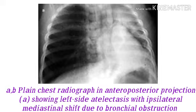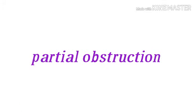A dense pulmonary opacity is also seen. If the collapse involves a small portion of lung, mediastinal displacement and abnormal physical signs may be absent, but a characteristic opacity will be seen on the radiograph. In cases of partial obstruction, there is less resistance to airflow during inspiration and expiration.